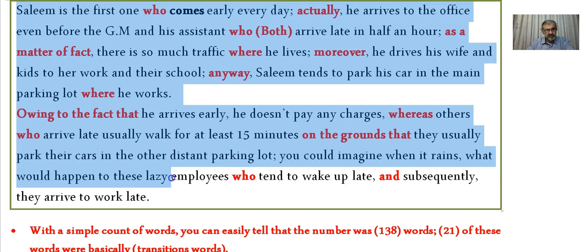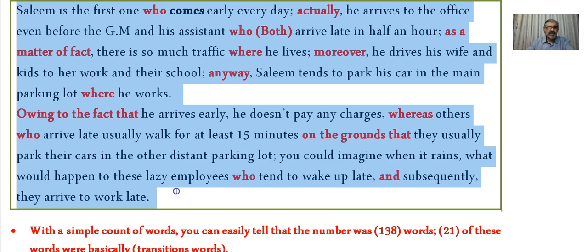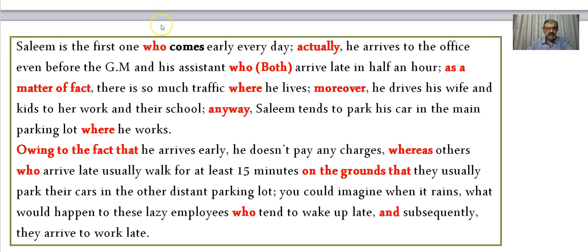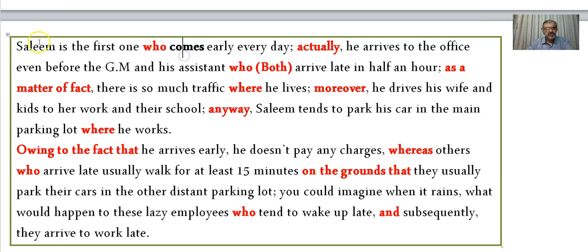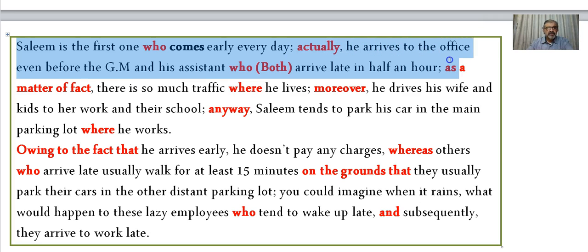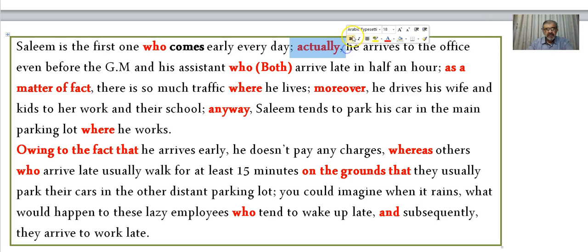Now I'll show you how those 16 sentences were transformed into two paragraphs simply by using link words. Salim is the first one who comes early every day. I'm using the present simple tense because it refers to repeated, permanent, regular, habitual actions. He arrives to the office even before the GM and his assistant, who — note the semicolon here and the comma there — both arrive late by half an hour.